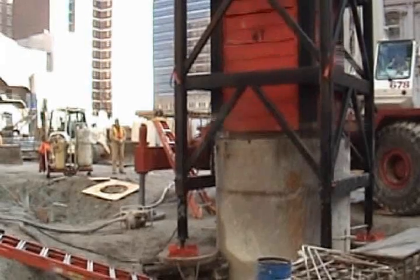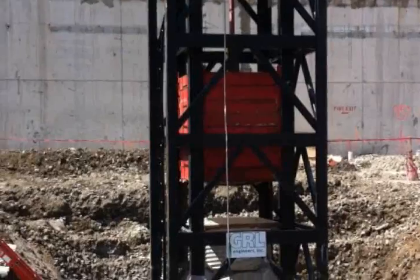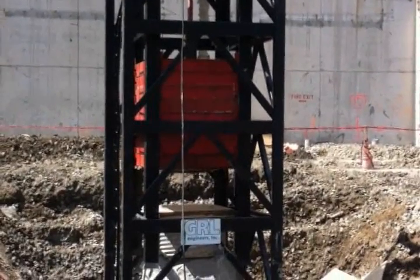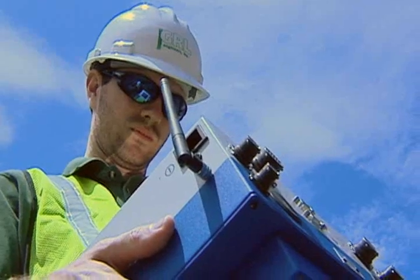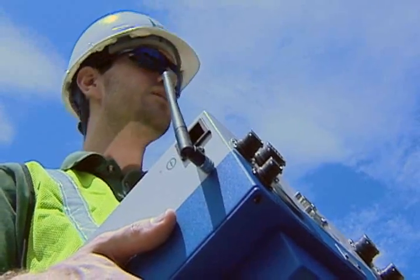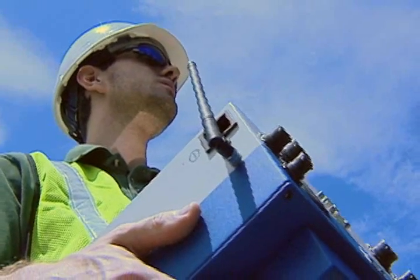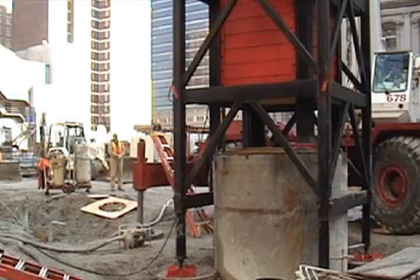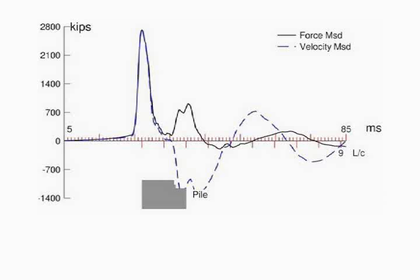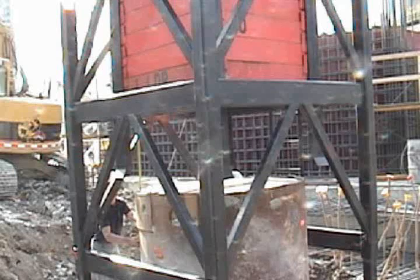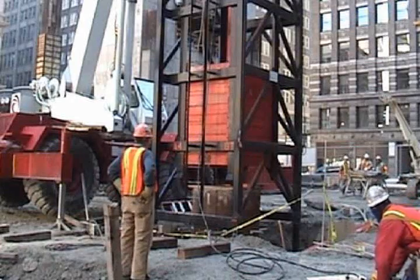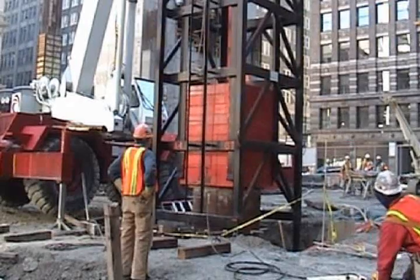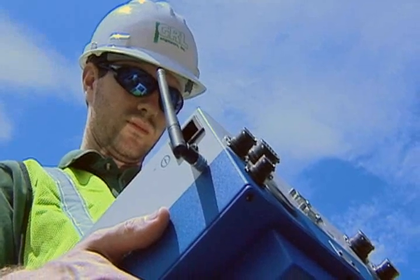The weight is now released and impacts the top of the shaft. The test is repeated with higher and higher drop heights and therefore increasing input energy levels. An engineer watches the screen of a special instrument displaying the measurements obtained with the accelerometers and strain transducers. The energy of the impact must be sufficient to activate the capacity of the shaft, which means that the shaft should move a small distance under the ram impact. This distance cannot be easily seen, but it can be measured and observed on the screen of the instrument.